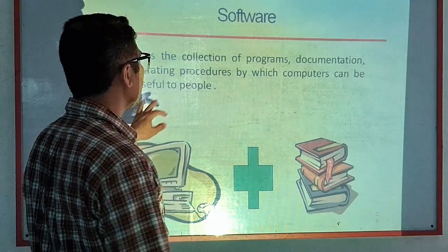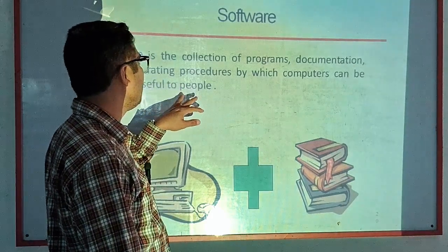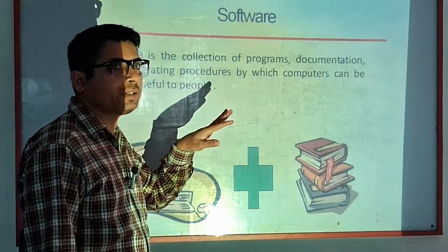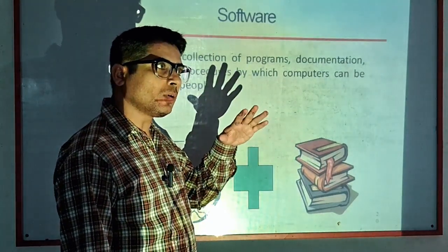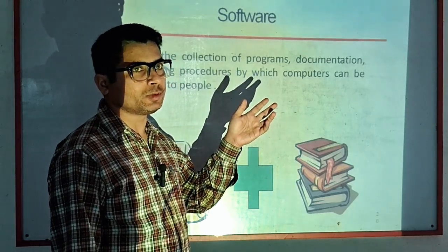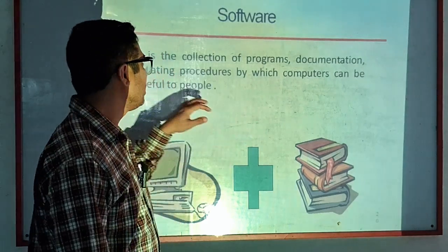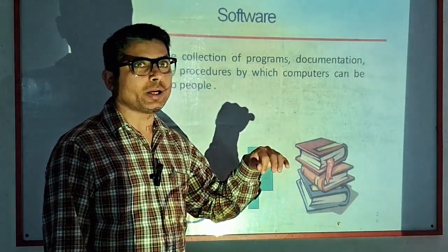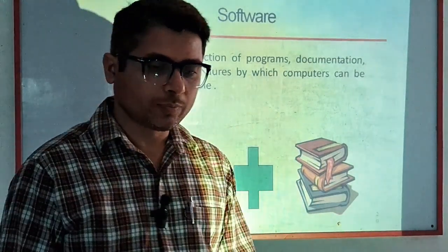Software is the collection of programs, documentation, and operating procedures by which the computer can be made useful to people. This is the basic definition of software. It includes everything that is run or produced in programs, and additionally includes documents and operating procedures so that they can be used by users.